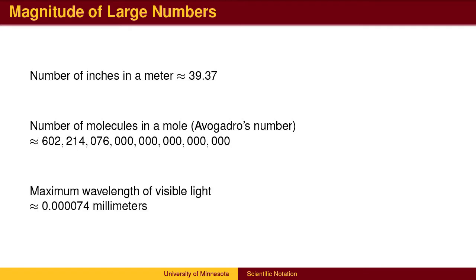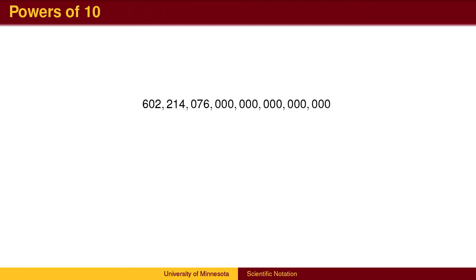Likewise, some numbers are very small. We have a hard time understanding exactly how short the wavelength of the color red in the rainbow is. To shorten the amount we have to write, we start by counting how many digits are in the number we are representing. We will use a power of 10 close to the given number.